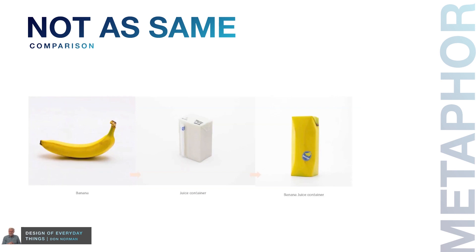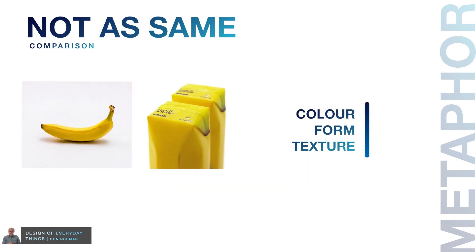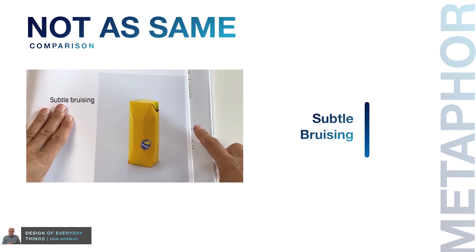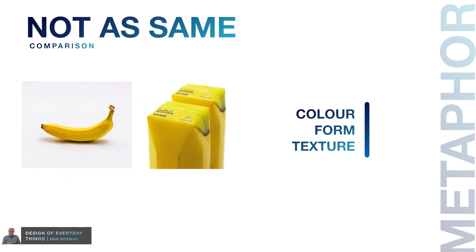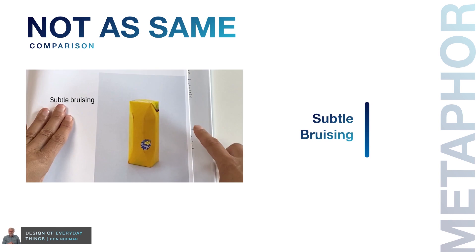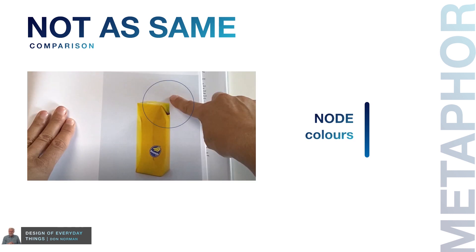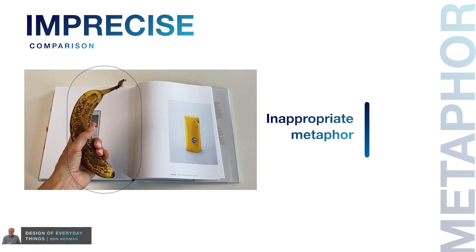You can see the crease — the juice container is converted to a banana juice container. See the color, the form, the texture — even the texture has that crease with a little brown color, making it feel like a pure banana. Even the subtle bruising they've created shows the feel of a banana. You can see that bruising on the banana somewhere. Wonderful, right? This is called metaphorical design.